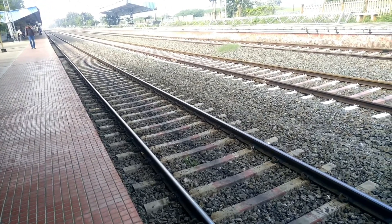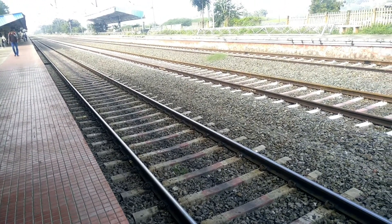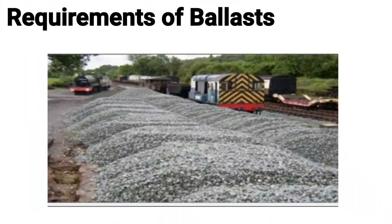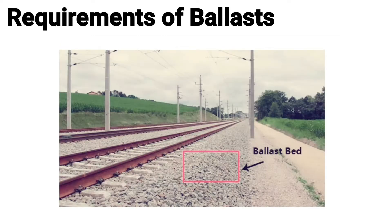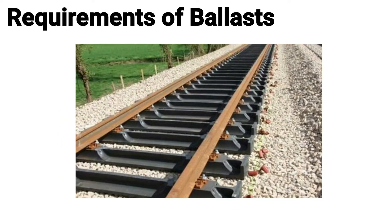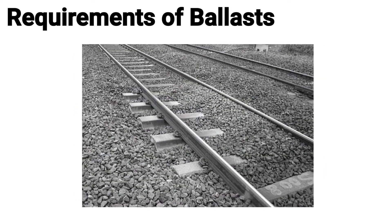Ballast is most economical in the long run. Requirements of ballast: it should be cubical in shape and also angular with sharp edges. Ballast should be tough and should not crumple under heavy loads. Ballast should not make the track dusty or muddy, and should not produce any chemical reaction with rails and sleepers.